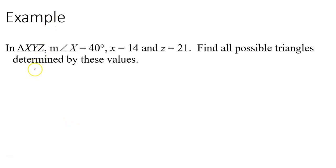All right. So if you had a chance to try this problem, let's see what we get. Triangle X, Y, Z. It doesn't matter which one is X, Y, or Z, as long as we're consistent with the sides. The measure of angle X is 40. The side X is 14. Side Z is 21. Find all possible triangles. So the first thing we'll do is we have the sine of 40, and the side opposite that angle is 14.